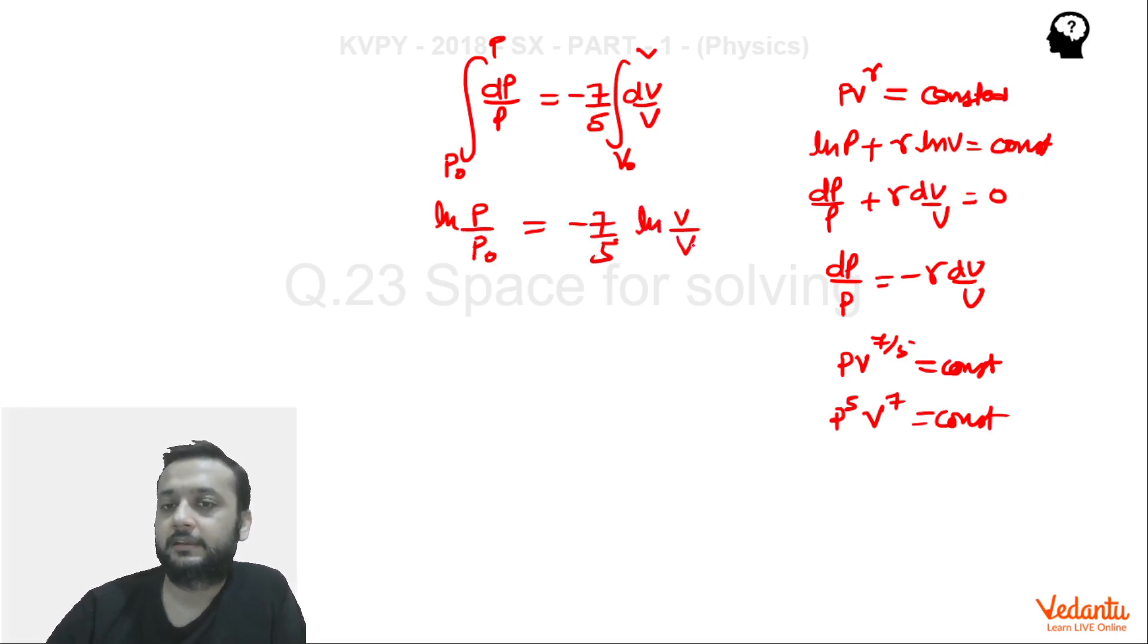ln of V/V₀. So P/P₀, you can take this on the left side. In fact 5 se multiply karke left side. What will it be? 5 times ln(P/P₀) equals minus 7 ln(V/V₀). We know that...